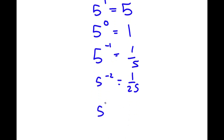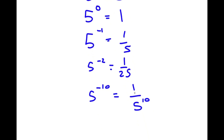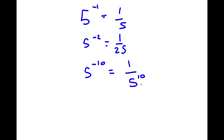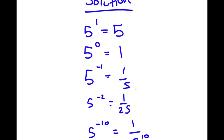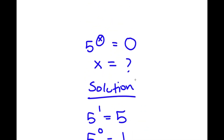If I have 5 to the power of negative 10, it's going to be 1 over 5 to the power of 10. As the exponent keeps on decreasing, the denominator is approaching infinity. But will it ever reach infinity? Let's see if we can find a value of x that makes this equal to 0.